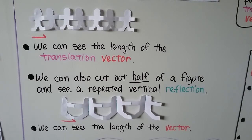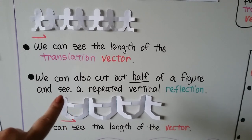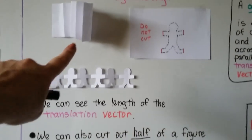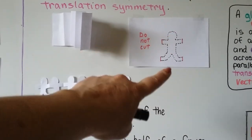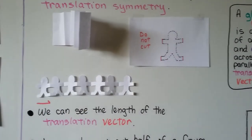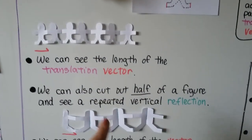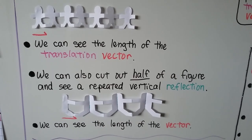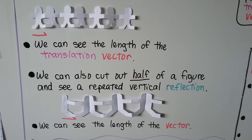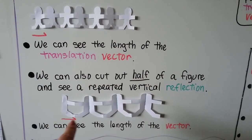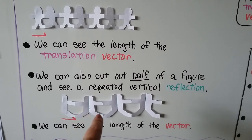We can also cut out half of a figure to see a repeated vertical reflection. If we had our folded paper and drew only half of a man, we'd be able to make a freeze pattern with translation symmetry. The length of the vector goes from the middle of his body to the tip of his foot — then it reflects, and we get this; then it reflects again, and again.